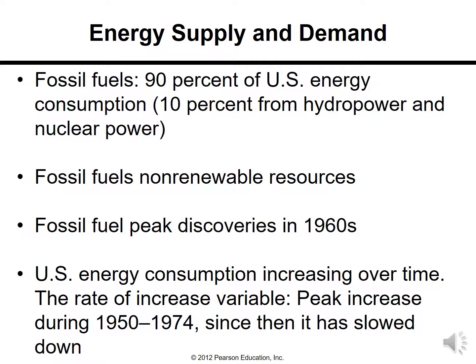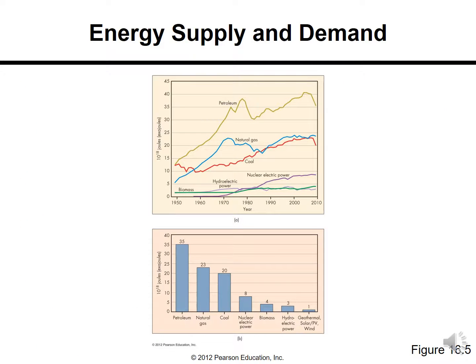Fossil fuels account for 90% of U.S. energy consumption. Fossil fuels are derived from plant and animal material. They are non-renewable resources, with peak discoveries occurring in the 1960s. Here is the energy supply and demand chart showing petroleum, natural gas, coal, biomass, hydroelectric power, and nuclear electric power over the years from 1950 to 2010.